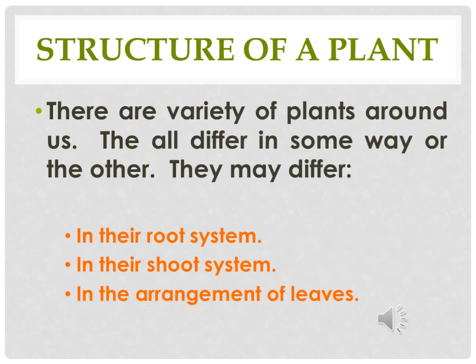If we talk about the structure of a plant, we can see that there are a variety of plants around us. They all differ in some way or the other — they may differ in their root system, in their shoot system, or in the arrangement of leaves. This we will see in this chapter.